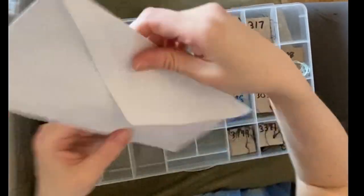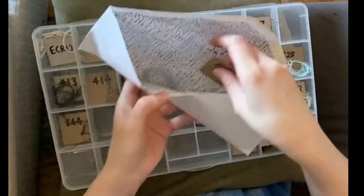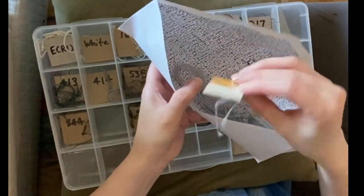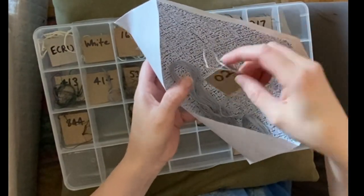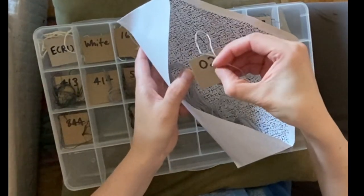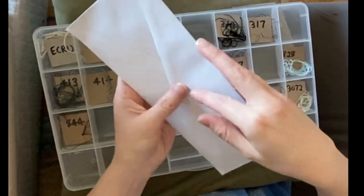So each of my colors will have the threads inside and then a little thread card I made. This is just a piece of cardboard that I got from a cereal box. I just cut it up into about one inch by one inch squares and then put a slit in it to hold spare little pieces like that.